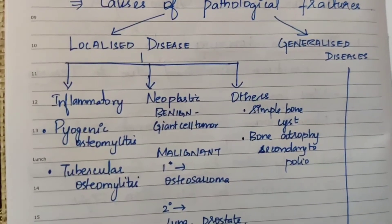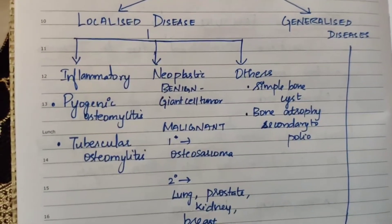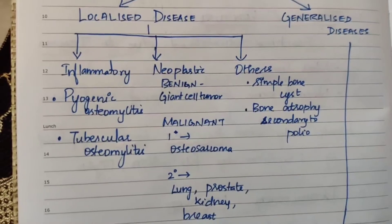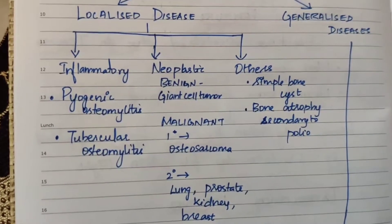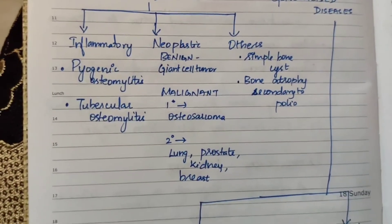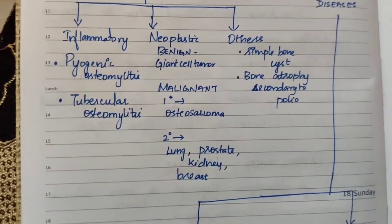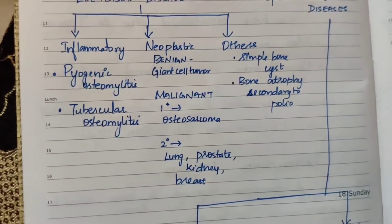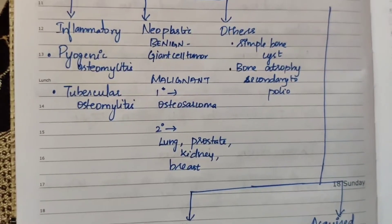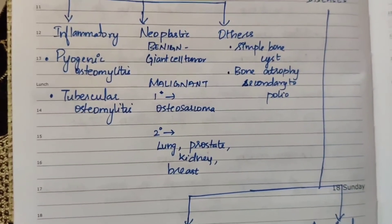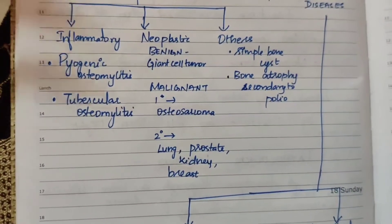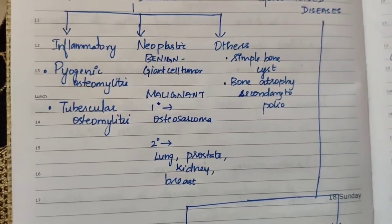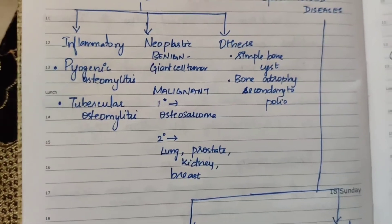Localized disease has three types: inflammatory, neoplastic, and others. Inflammatory means infection — for example, pyogenic osteomyelitis and tubercular osteomyelitis. When the bone is already infected, even a little pressure causes a break.